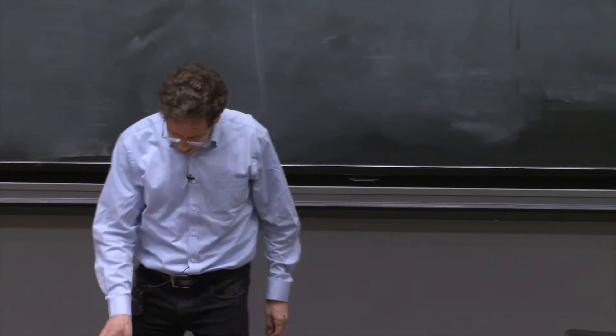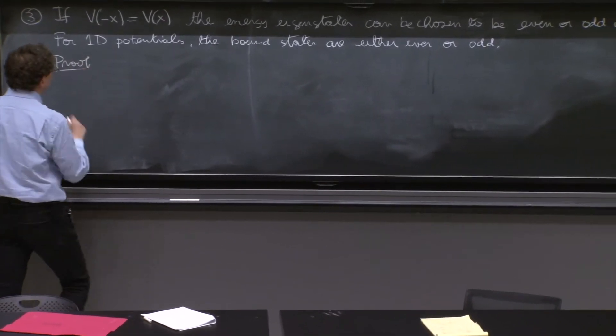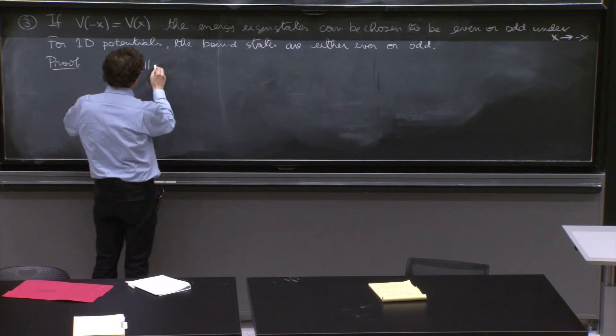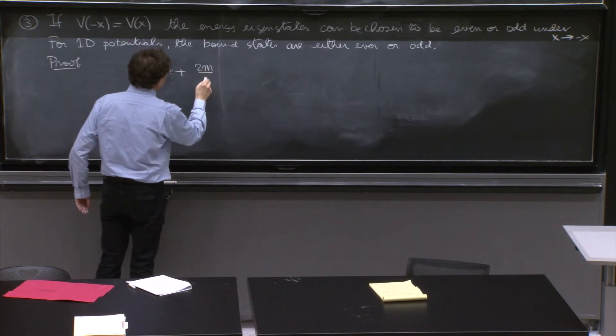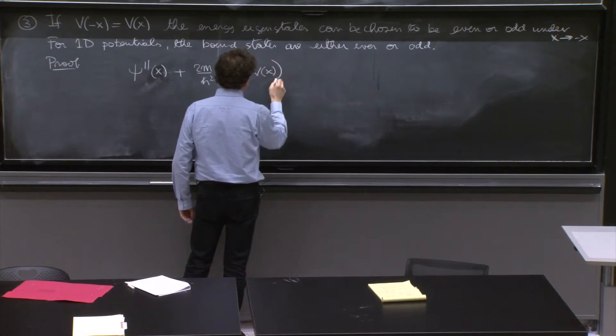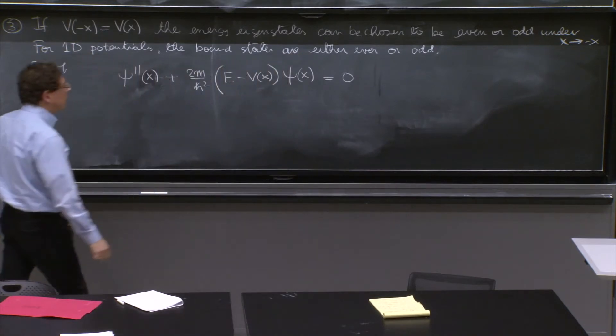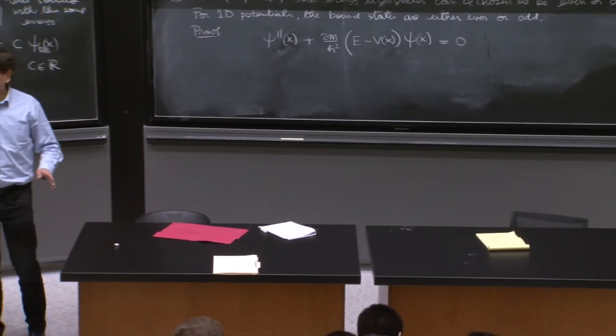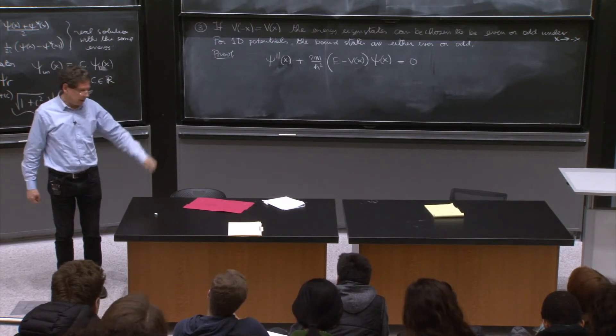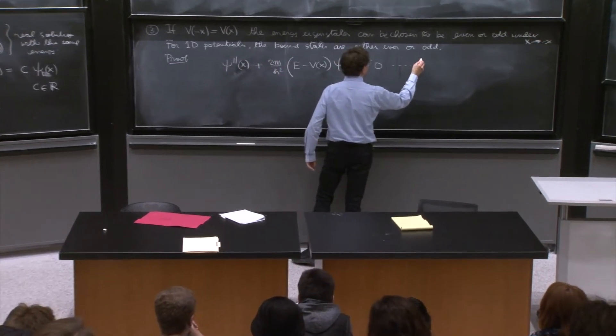So let's just try to prove it. So complete proof in this case. Proof. What is the equation we have to solve? So ψ''(x) + (2m/ℏ²)(E - V(x))ψ(x) = 0. Now, the proof actually is very simple. I just do it and I elaborate on it because it's possible to get a little confused about it. So I think it's kind of interesting. So here's equation 1.